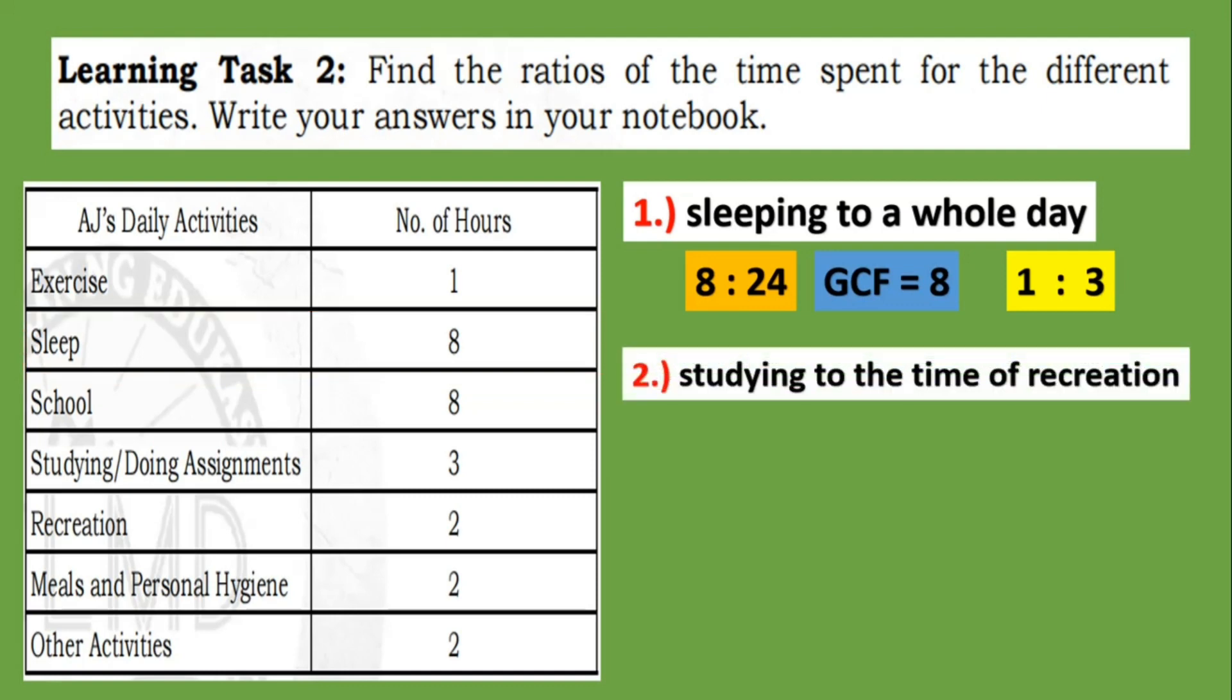For number two, we have studying to the time of recreation. So for studying, we have three hours spent in a day. And the time for recreation, we have two hours spent in a day. So to write it as ratio, we have 3:2. So 3:2 is already our lowest term.